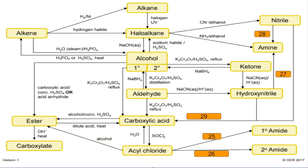Twenty-five: acyl chloride to primary amide — react with ammonia. Twenty-six: acyl chloride to secondary amide — react it with a primary amine. Twenty-seven: hydroxynitrile to amine — react with hydrogen and a nickel catalyst. Number twenty-eight: nitrile to amine — hydrogen and nickel catalyst. And finally, twenty-nine: hydroxynitrile or nitrile to carboxylic acid — heat it with water and hydrochloric acid.